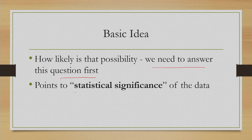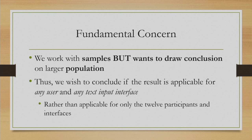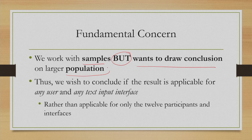To answer this question we need to perform a statistical significance test. This points to the statistical significance — or reliability — of the data. We work with samples, a small subset of the actual population, but we want to draw conclusions on the larger population. We wish to conclude if the result is applicable for any user and any text input interface in the specific context, rather than applicable only for the 12 participants and interfaces we studied. This is the fundamental concern.